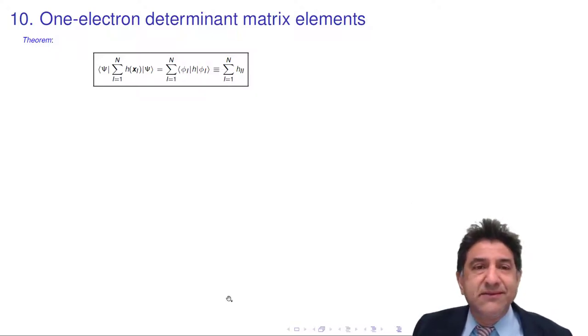In the previous lecture I talked about the overlap of two determinant wave functions, but now we're going to do a more tricky integral, only slightly more tricky. It's called a one-electron integral, a determinant matrix element between one-electron matrix elements.